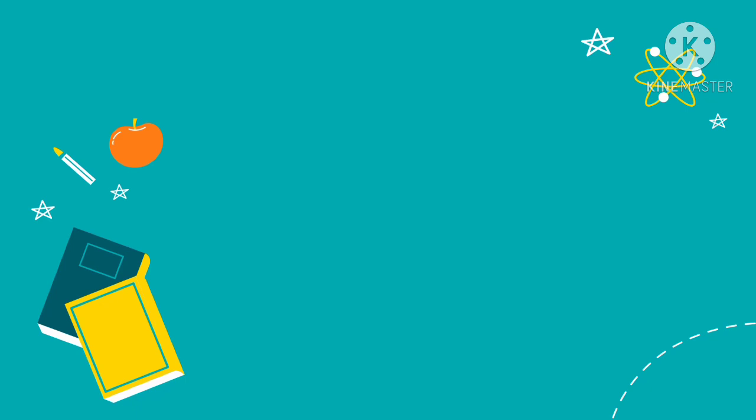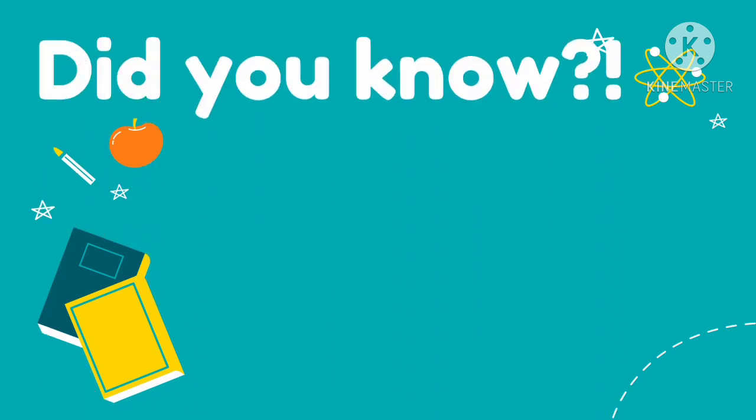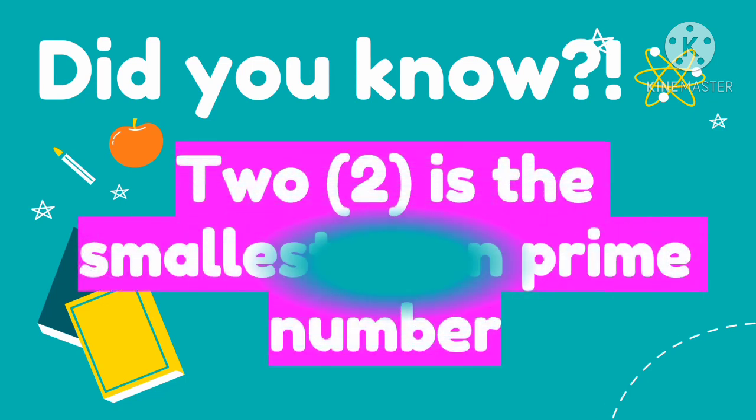Before we proceed to the definition of a composite number, I will give you a trivia. Did you know that 2 is the smallest even prime number? So 2 is a prime number because its factors are only 2 and 1. That's why it is the smallest even prime number.